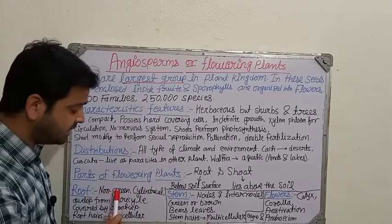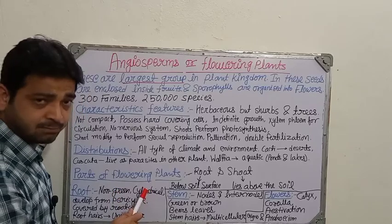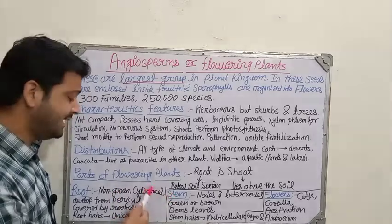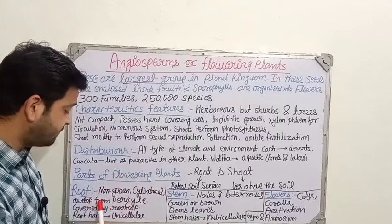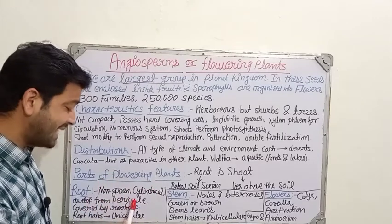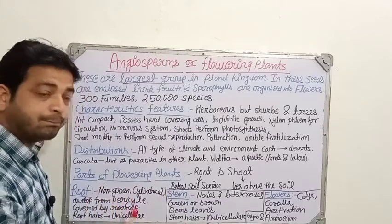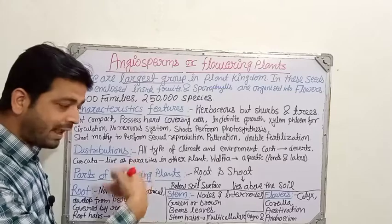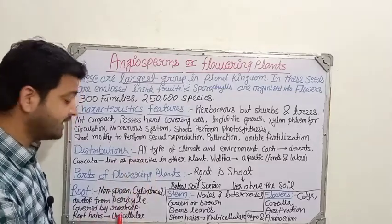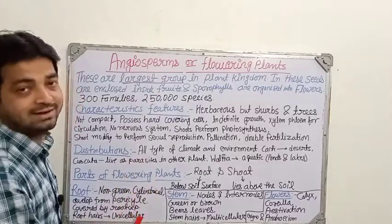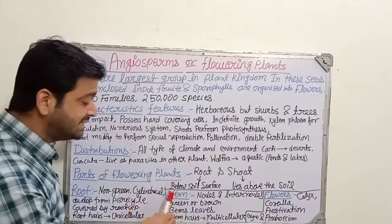When we talk about roots in the flowering plant, they are non-green — green color will not be there. They are cylindrical in shape. They are developed from the pericycle, covered by a root cap — that outermost layer. Root hairs are unicellular — that is a feature of the root.